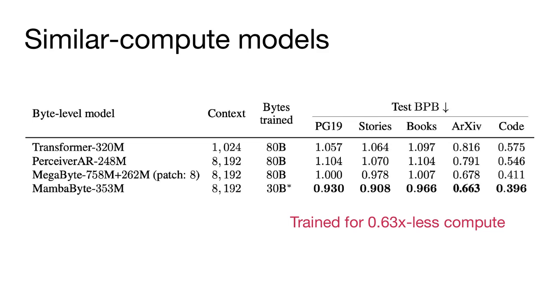So first off, we compare MambaByte to other byte-level models. In the first set of experiments, we attempt to compare models that use similar amounts of compute per byte. The main comparison here is between Megabyte and MambaByte. We find that MambaByte, even though it's trained on 60 percent of the bytes, is able to obtain better loss across five different datasets. This indicates that Mamba is indeed a very good fit for byte-level language modeling.